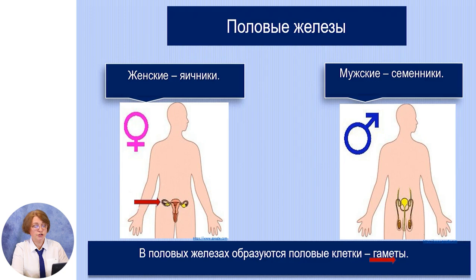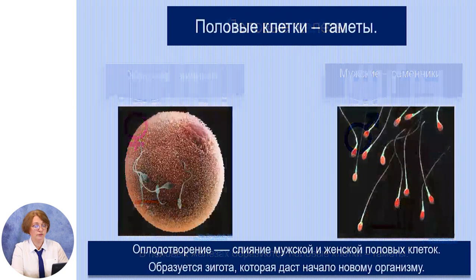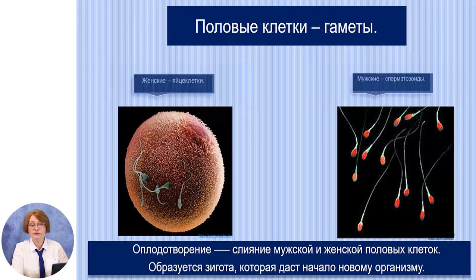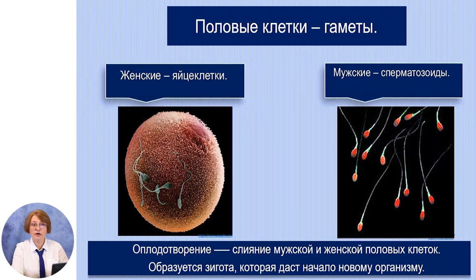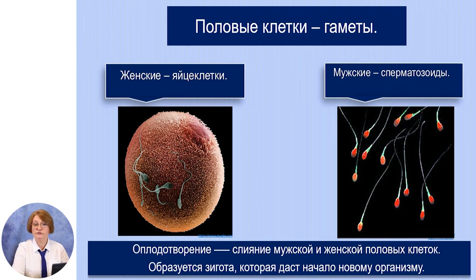На рисунке мы видим расположение яичников и семенников. Женские половые клетки называются яйцеклетки, а мужские половые клетки – это сперматозоиды. Процесс оплодотворения – это слияние мужской и женской половых клеток. При этом образуется зигота – одна единственная клетка, которая даст начало новому организму.